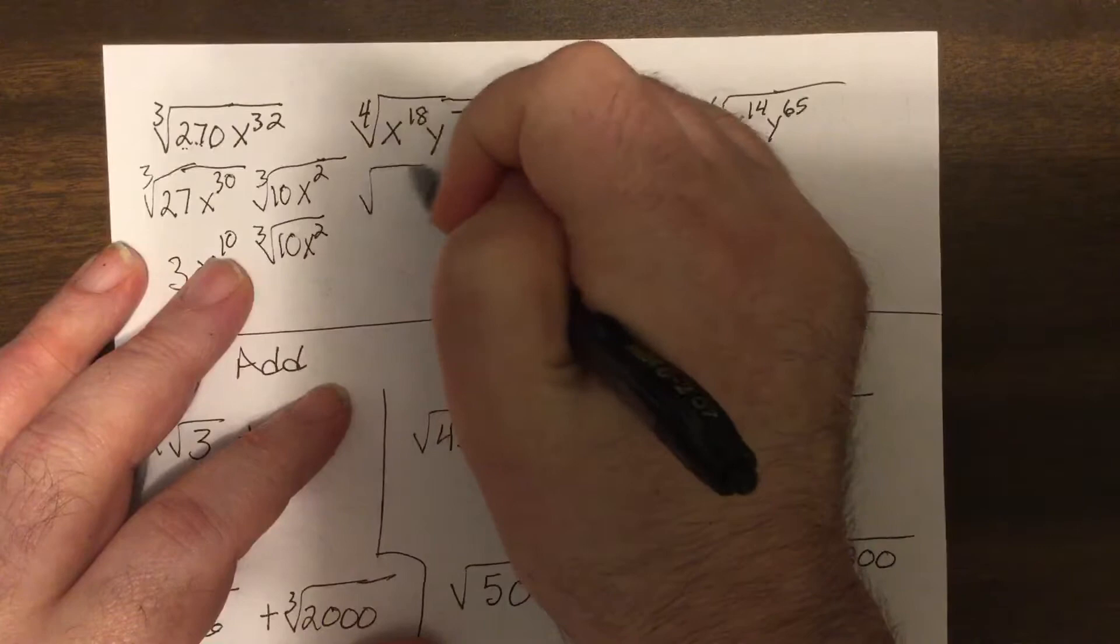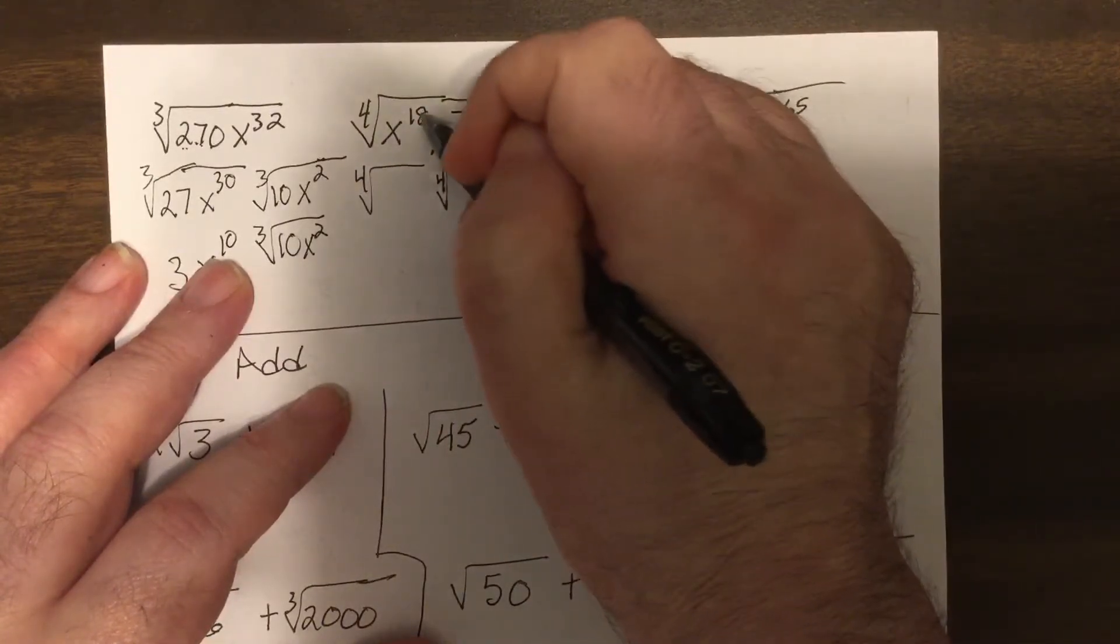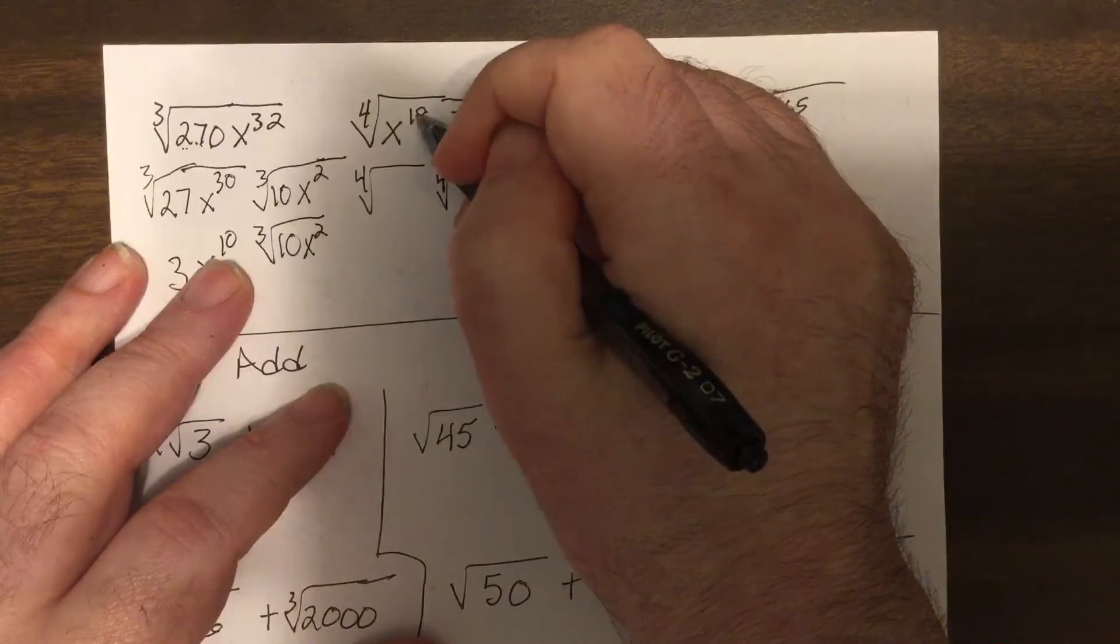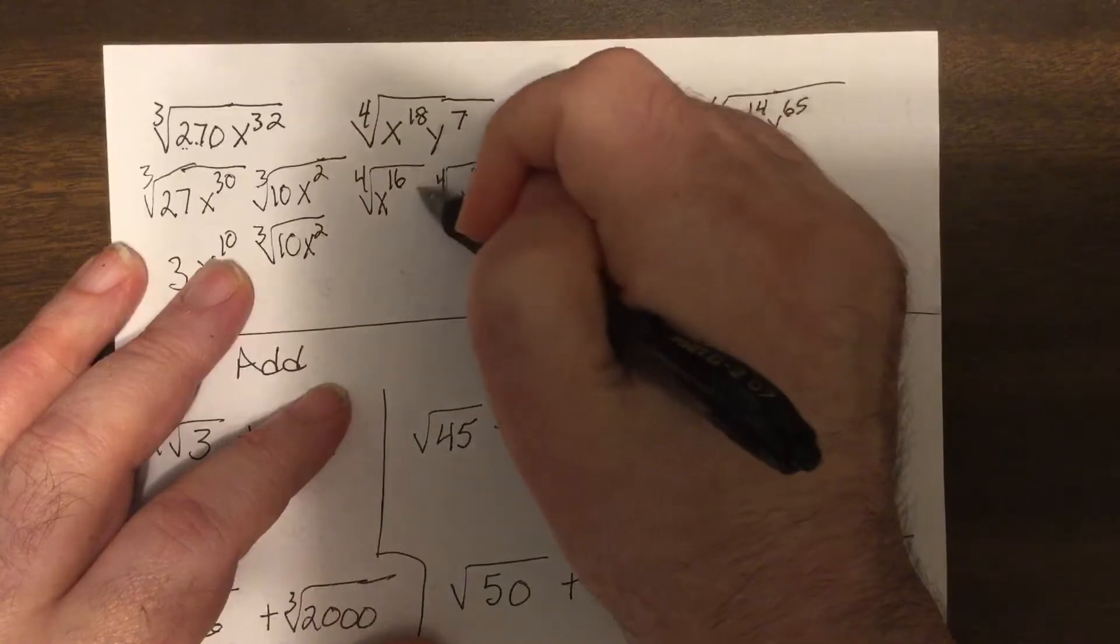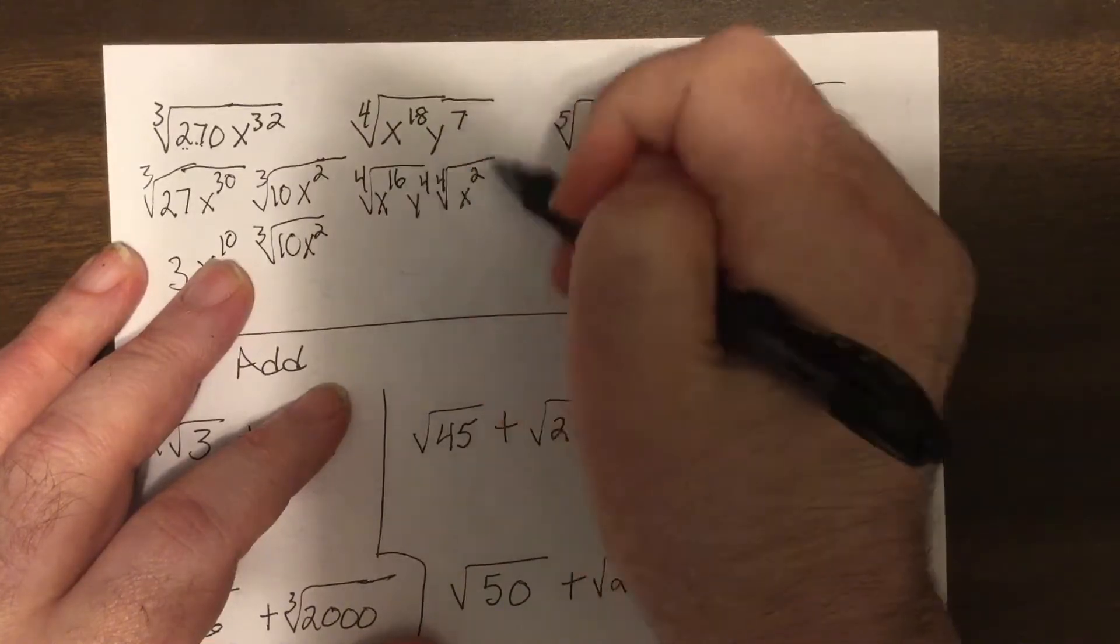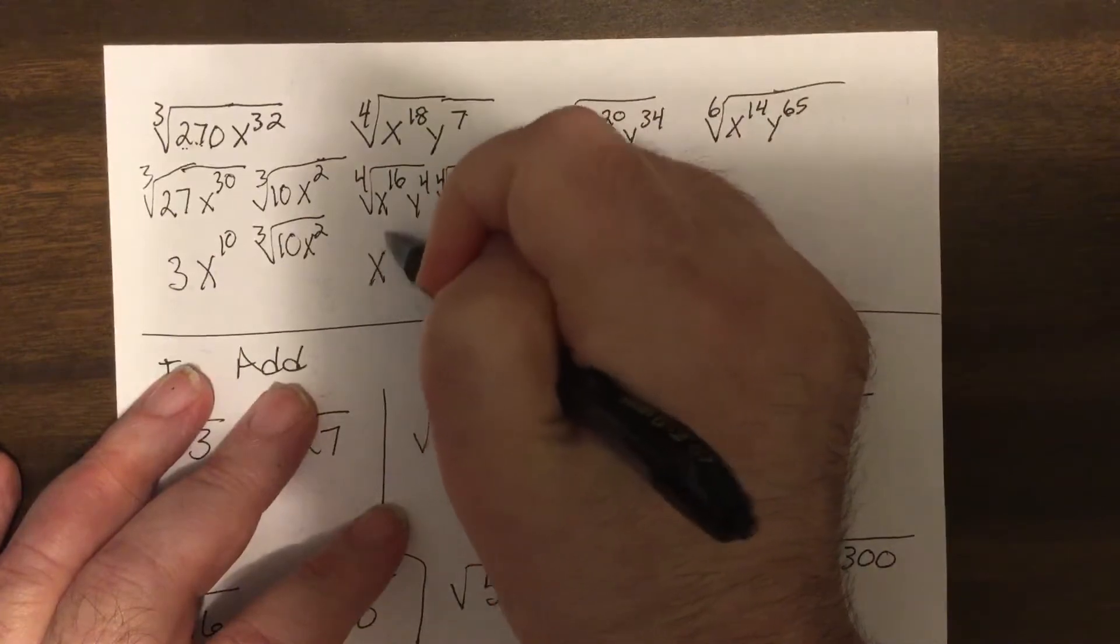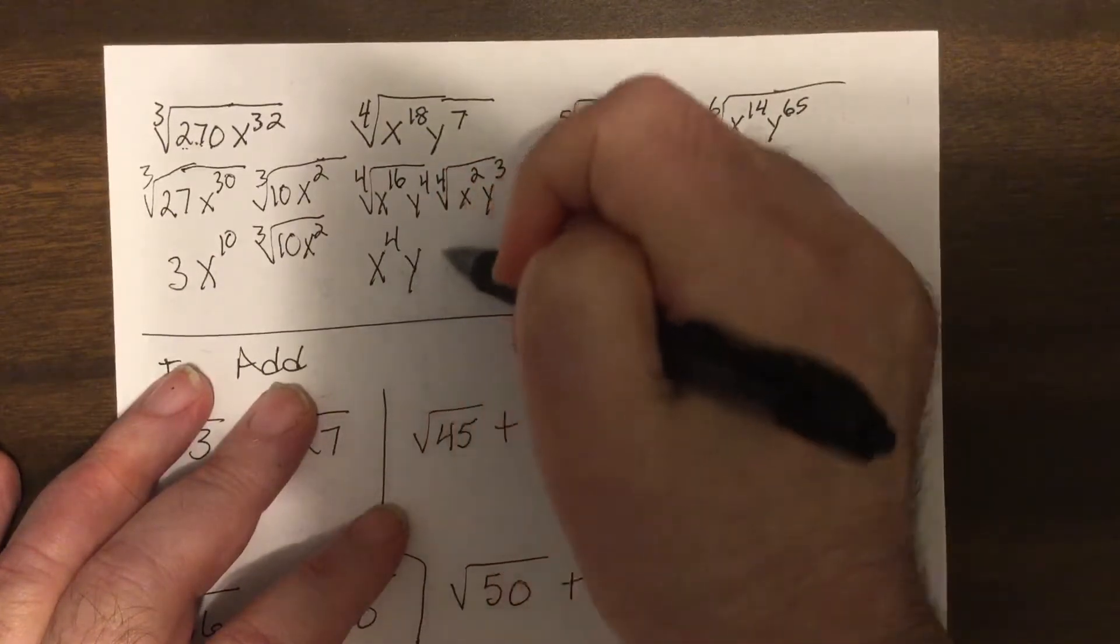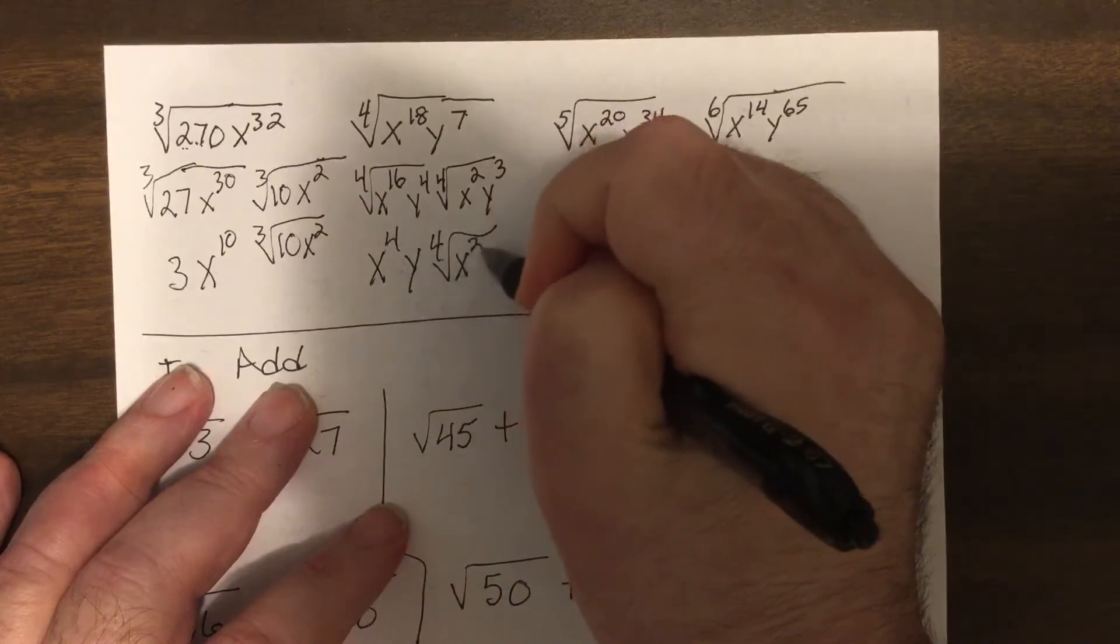So this one, I need perfect fourth powers. That means this has to be divisible by four. So I break it up x to 16th, x squared would be left over. Y to the fourth, y cubed would be left over. So it'd be x to the fourth, y and the fourth root of x squared, y cubed.